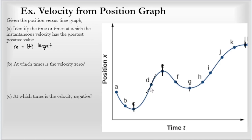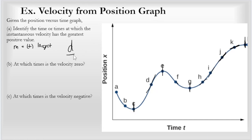Looking at where the slope is largest within those positive regions: D is a good candidate. H and I are not as steep as D, J is not as steep as D, and K is not as steep as J. So the instantaneous velocity based on the slope of the tangent line is going to be greatest at point D — we're simply looking at the slope of the tangent line.